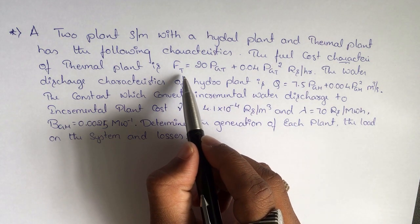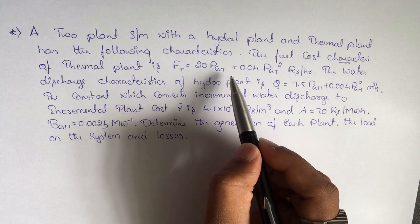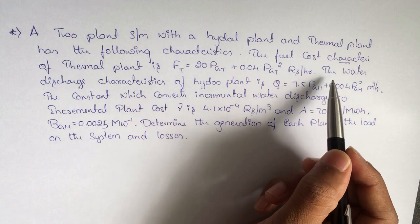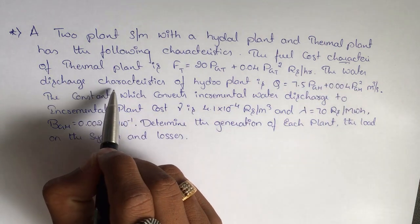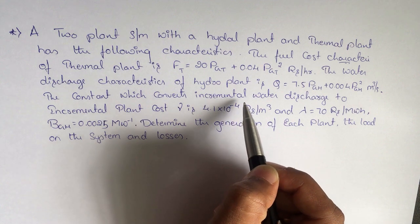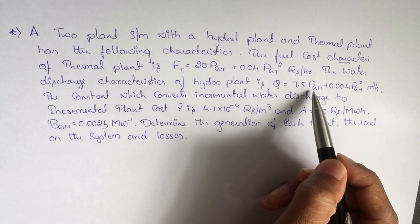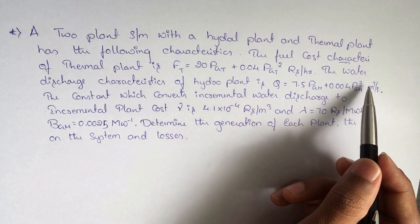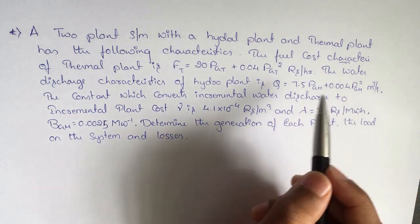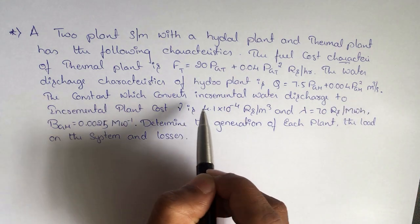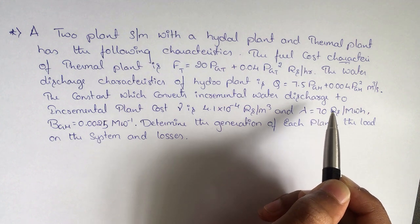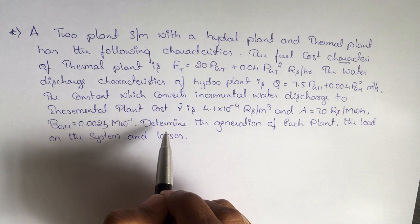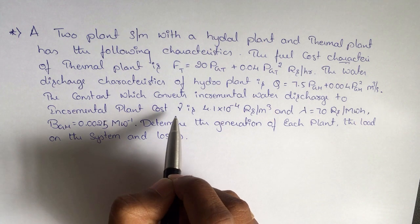The fuel cost characteristic of the thermal plant is: F_T = 20·P_GT + 0.04·P_GT² rupees per hour. The water discharge characteristic of the hydro plant is: Q = 7.5·P_GH + 0.04·P_GH² meter cube per second.